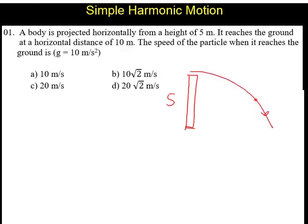Whenever a body is projected, it will have two velocities when it is coming down. One is velocity along the x-axis and the other one is velocity along the y-axis.